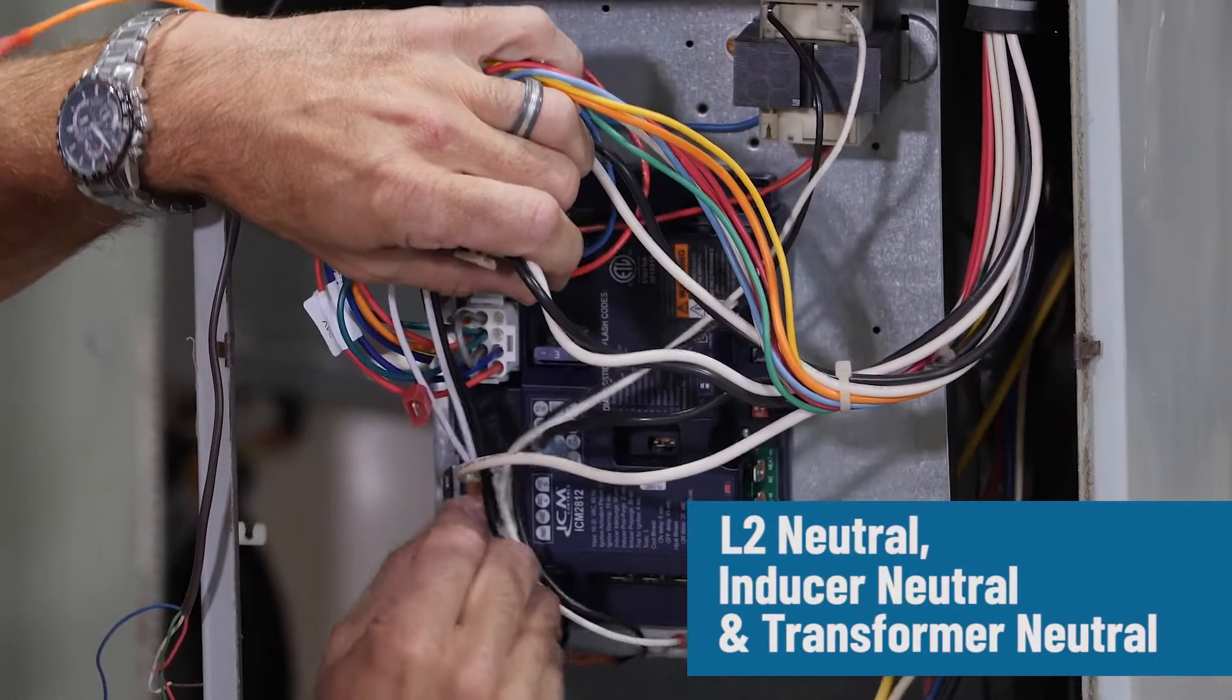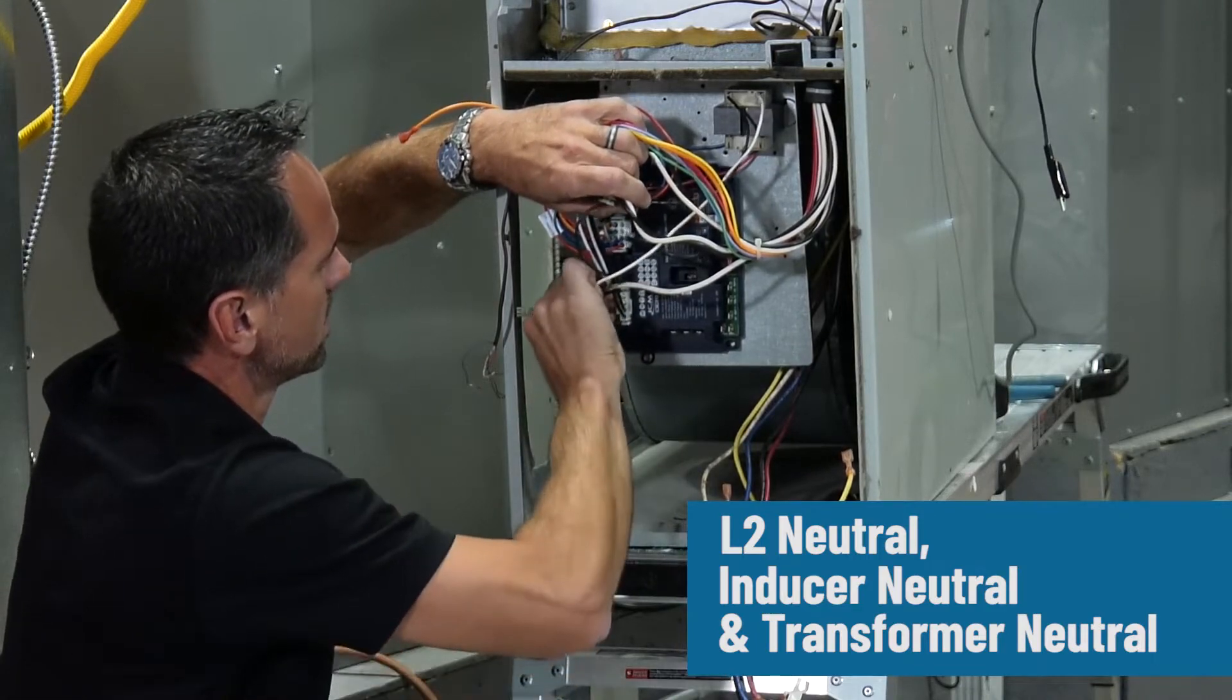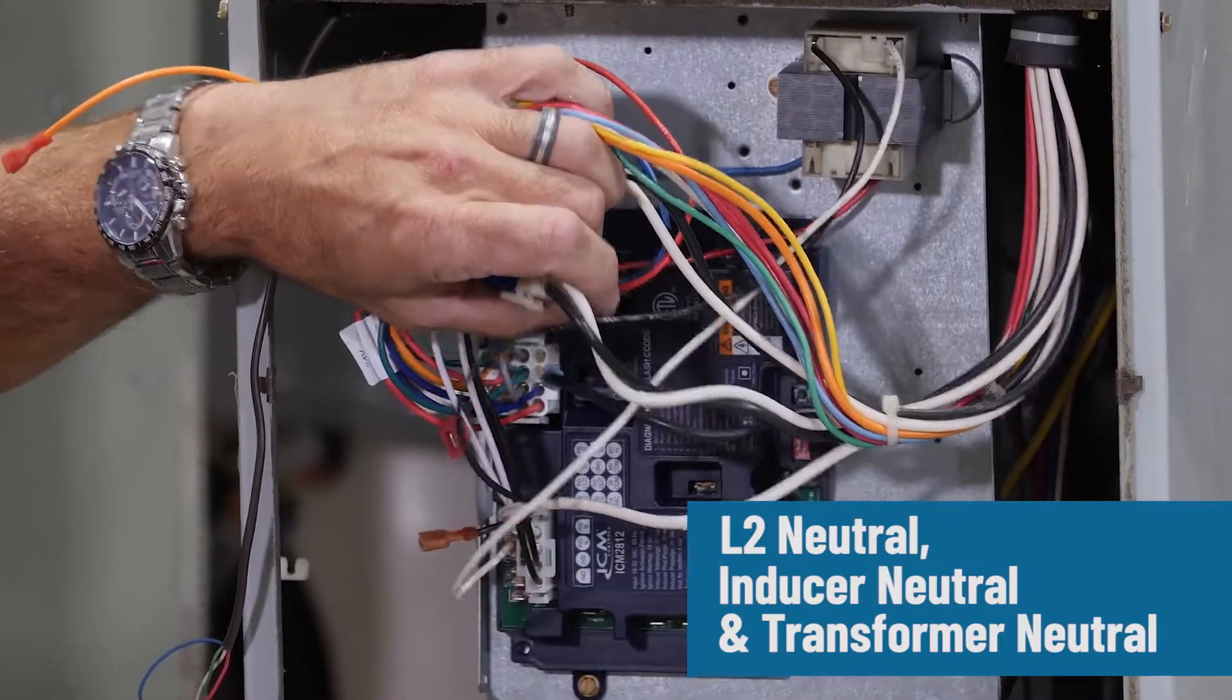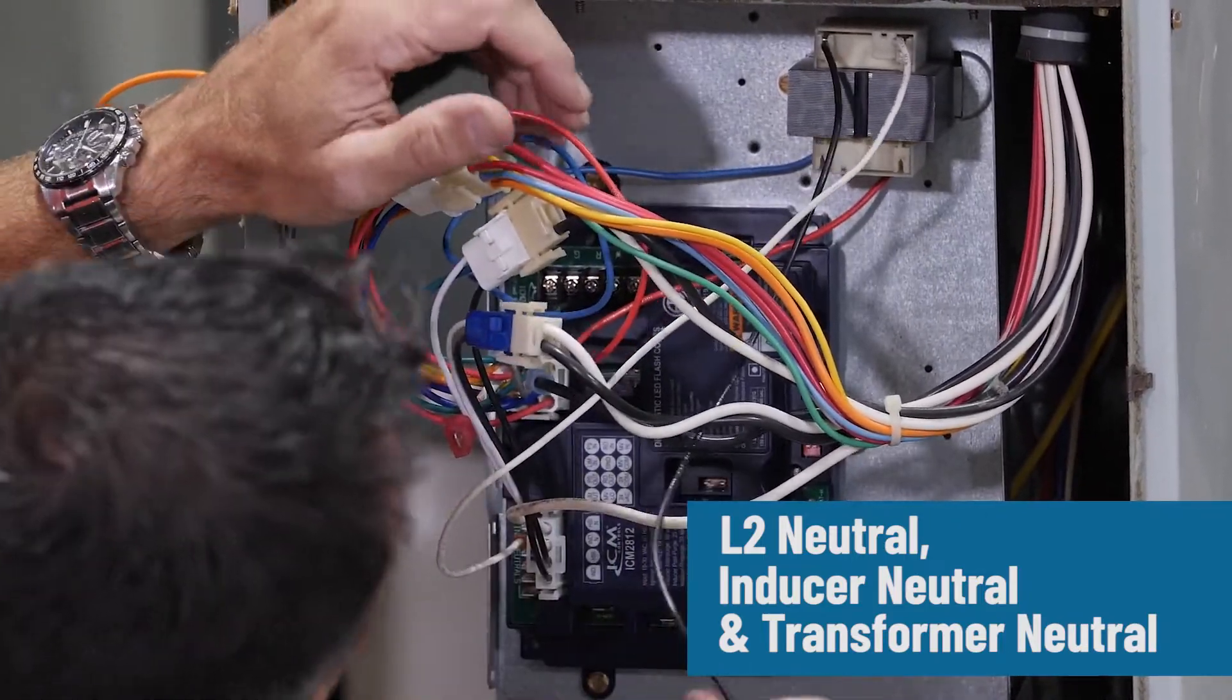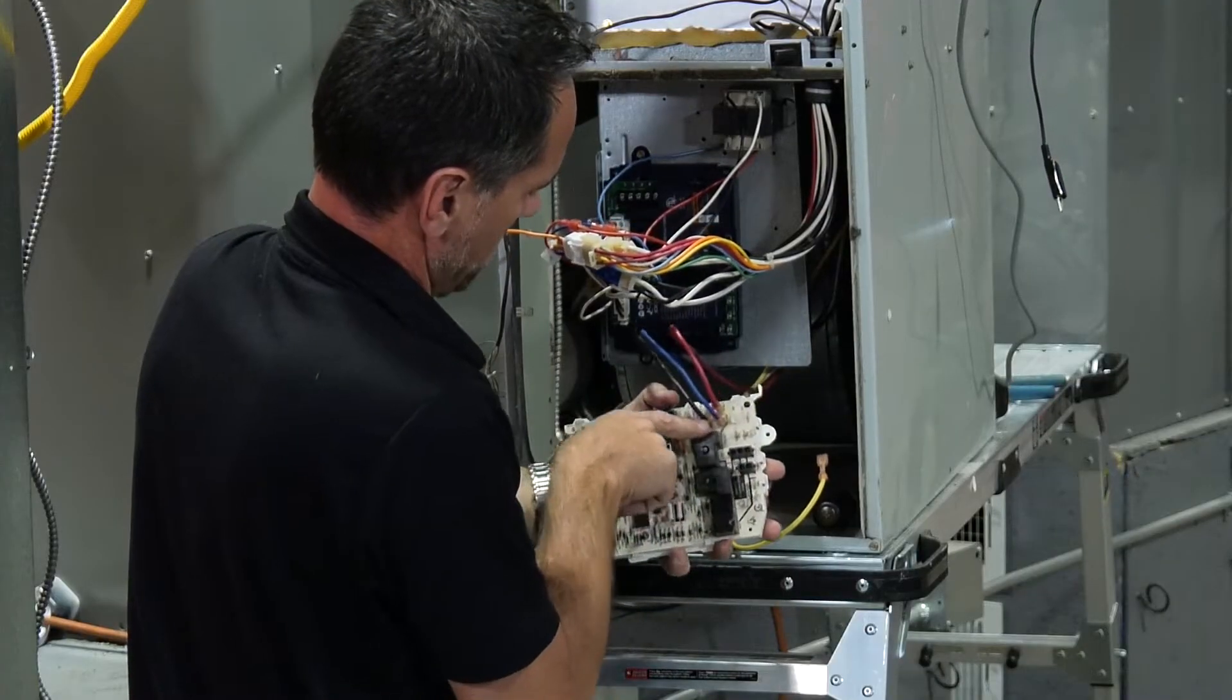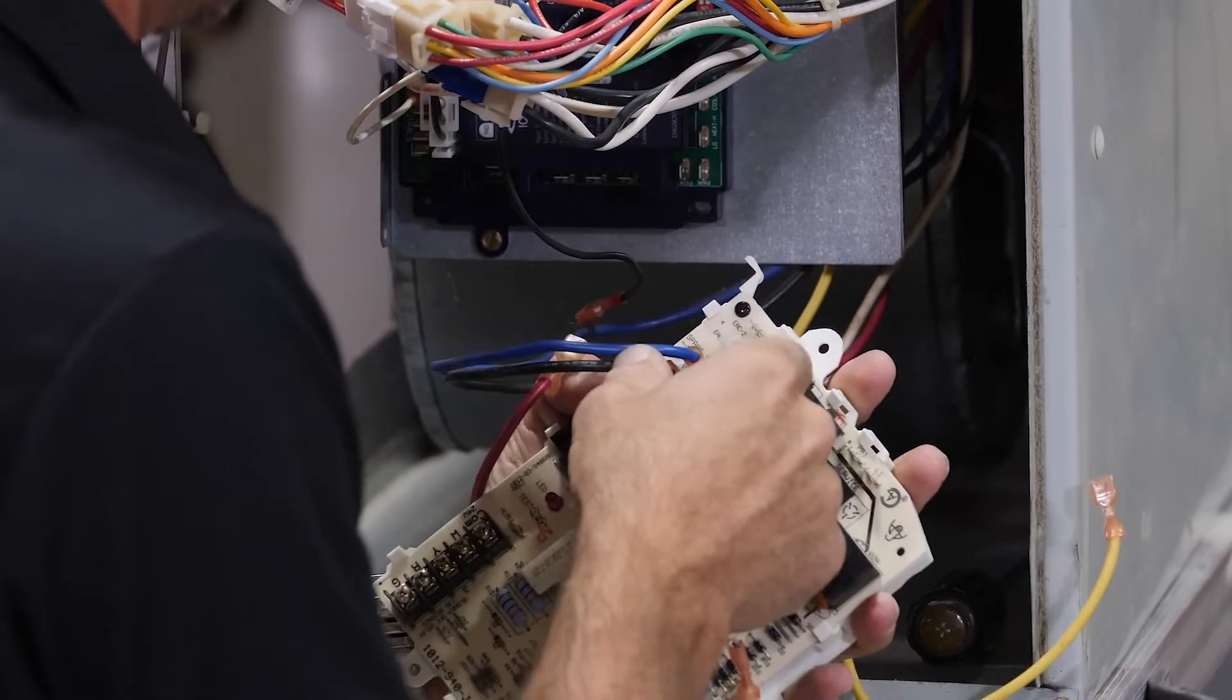This is your blower and your transformer. Transformer primary. Our blower taps are all over here. See where they were on the existing board, which ones were set to spare. Try to do those first.